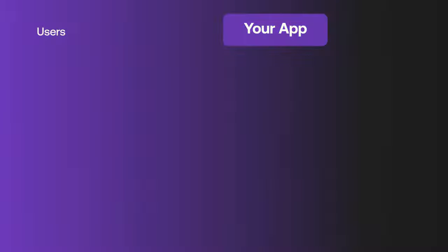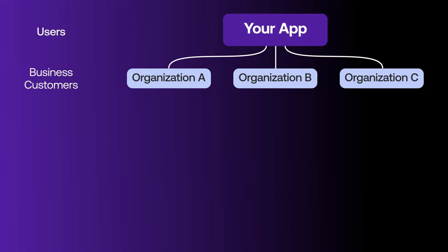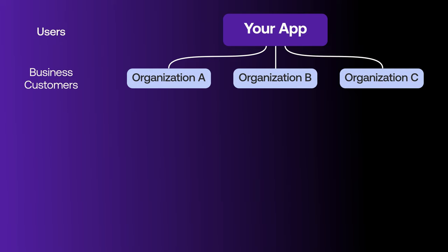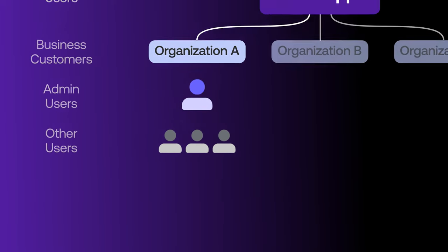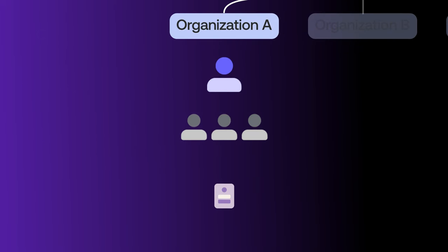When users log into your application, how they log in depends on requirements defined by each business. For example, let's say you have three customers with varying needs. Organization A is a small business, so they're comfortable with letting their members log in with Google or another preferred social identity provider, or IDP.